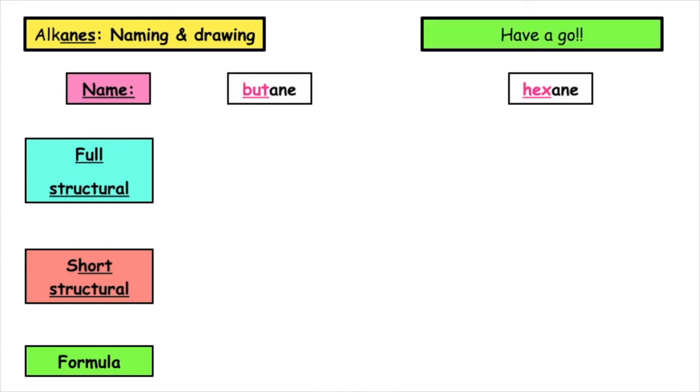So here's your turn to have a little go. If you want to pause the video, you can have a go at drawing out the full structural, the shortened structural, and the molecular formula for the two examples of butane and hexane. And when you're ready, you can resume the video and I will go through the answers.